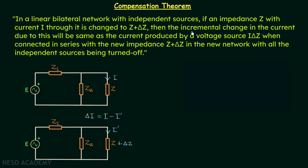This incremental change in current will be the same as the current produced by a voltage source providing I·delta Z, connected in series with the new impedance, in the new network with all independent sources turned off. So we will turn off the independent source, put one voltage source providing voltage I·delta Z in series with the new impedance, and this will give us delta I.